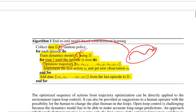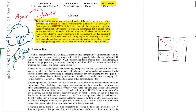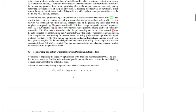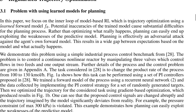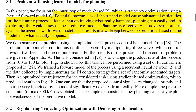Importantly, the world model only learns about things you have actually done — the green area in the room example. The world model can only accurately estimate the world where you have been. That's the entire problem, because the planning algorithm can now exploit regions outside that explored area. Potential inaccuracies of the trained model cause substantial difficulties: planning effectively becomes an adversarial attack against the agent's own forward model, creating a wide gap between model expectations and what actually happens.